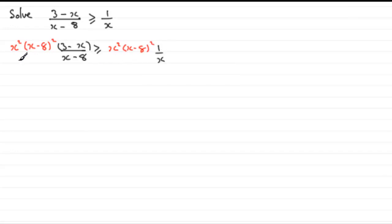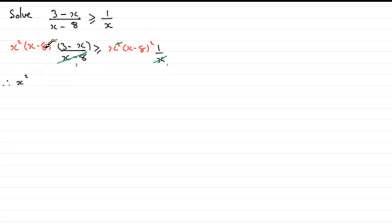Now we clean this up. The (x minus 8) on the left cancels into one of the squared factors, and the x cancels with x squared leaving just x. Expanding the brackets, we get x squared multiplied by (x minus 8) times (3 minus 8x), which gives 11x minus x squared minus 24.